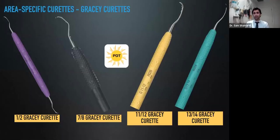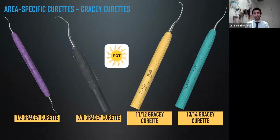We also need area-specific curettes. In the anterior section, we usually focus on our 1-2 and our 7-8 — the 7-8 being universal, the 1-2 having a slightly longer blade and handle to access areas a little better. If more comfortable with area-specific ones, we've got 11-12s for mesials and 13-14s for distals. But usually in the aesthetic zone, the 7-8 and the 1-2 will do the job.